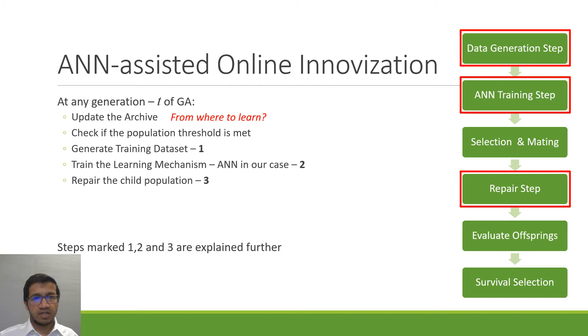So at any generation T of the genetic algorithm we first update a solution archive, then we check whether the population threshold is met, that is whether we should learn or not, then we identify what to learn, we train our learning mechanism in this case which is the artificial neural network, and then we repair the child population.